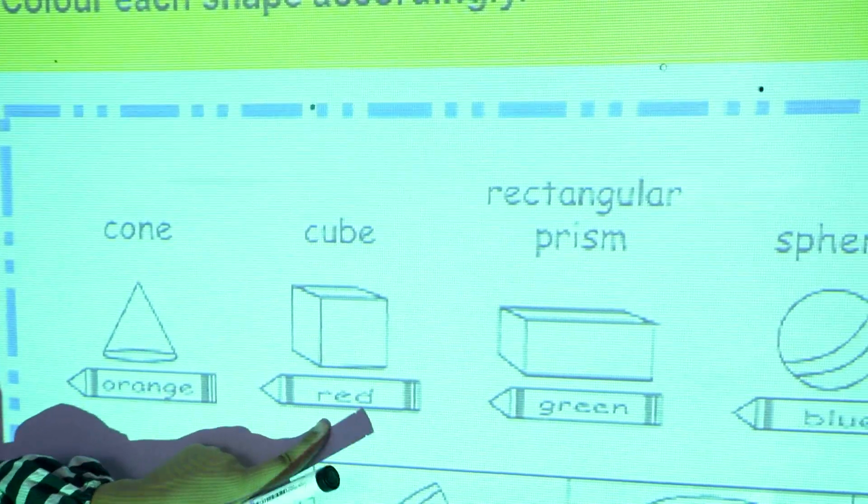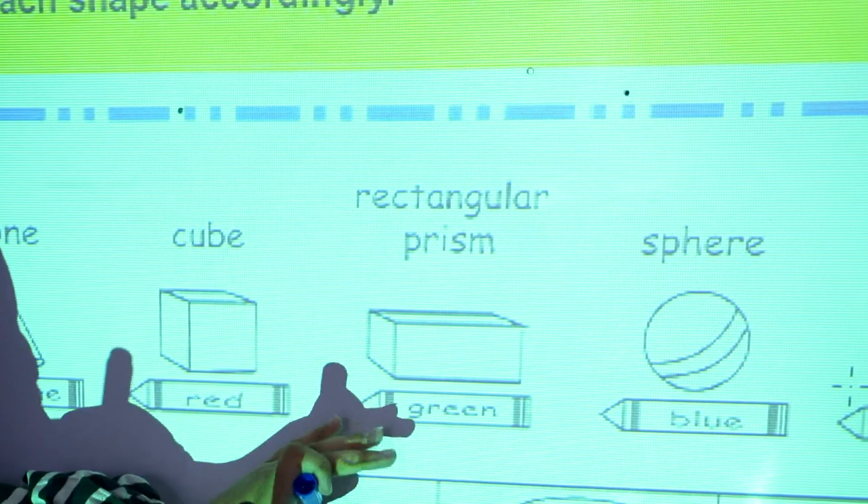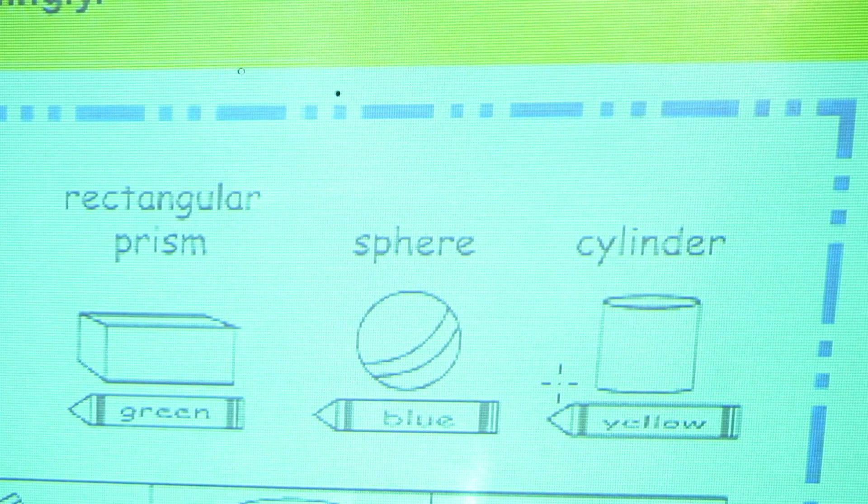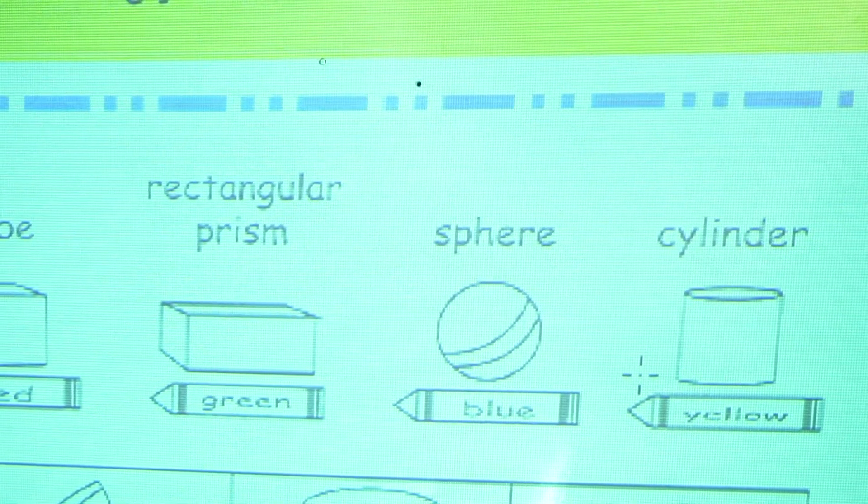Cube, you have to color it red. Rectangular prism, you have to color it green. Sphere, you have to color it blue and cylinder yellow. In this way, you have to complete your activity by your own.